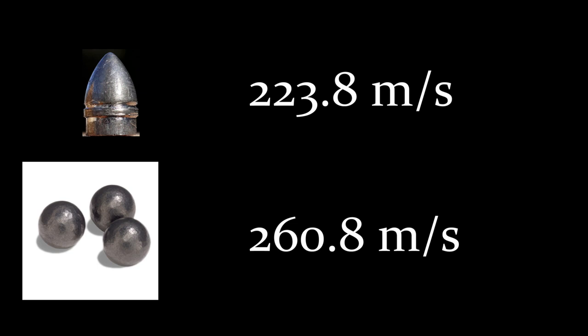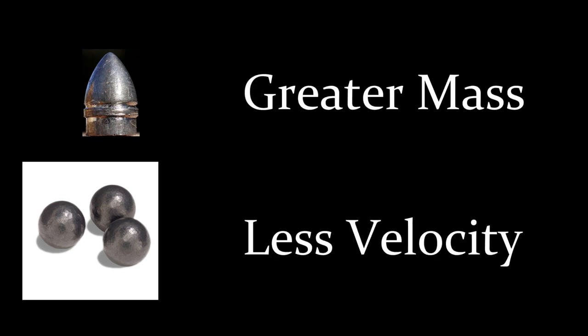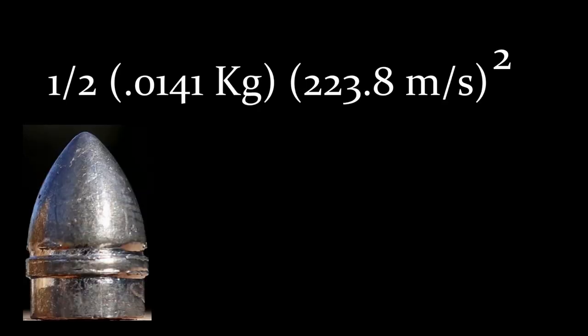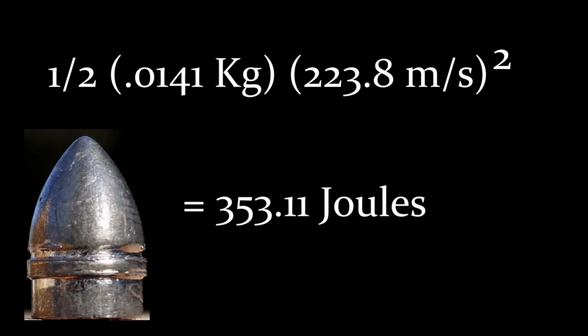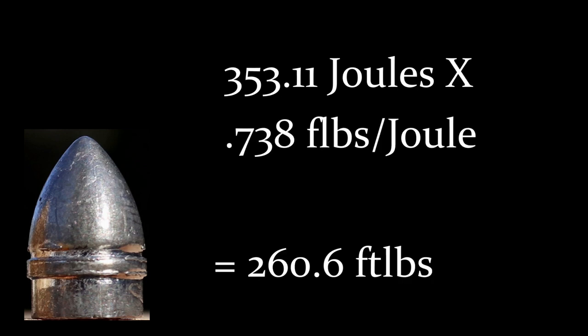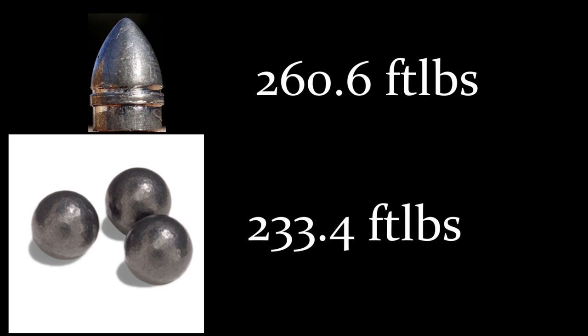When you compare the two of them, we've got greater mass with the conical but less velocity. We'll see what that does in our formula. Plugging in all the right numbers with all the right units is going to give us our kinetic energy in joules at 353, and we convert that to foot pounds and get 260 foot pounds for the conical bullet.